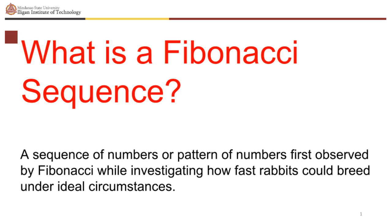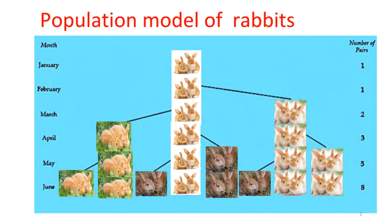Adult rabbit pairs give birth to a pair of newborns. Here is a population model of rabbits: starting with a pair of newborn rabbits, male and female, determine the population of rabbits at a given period of time. Under ideal circumstances, a pair of newborn rabbits take one month to mature and no rabbits die.